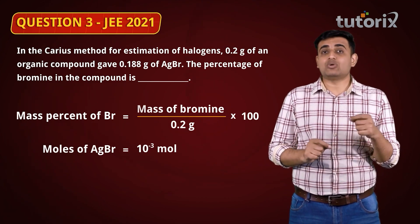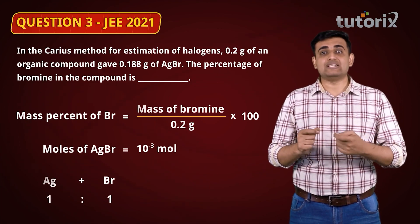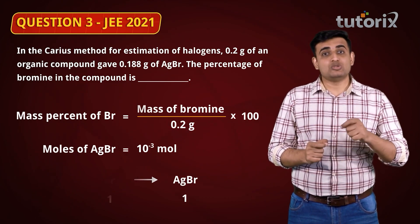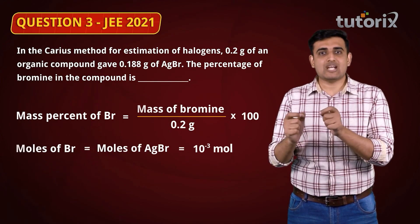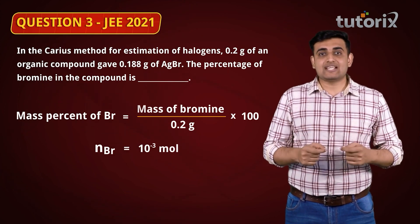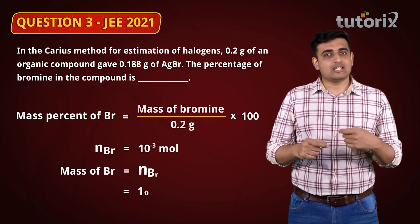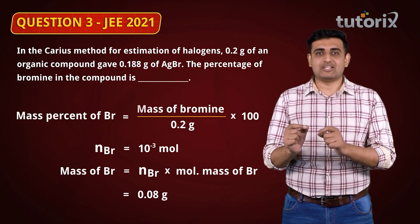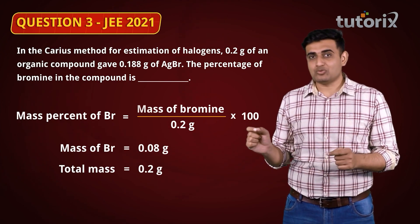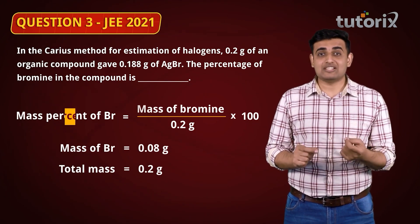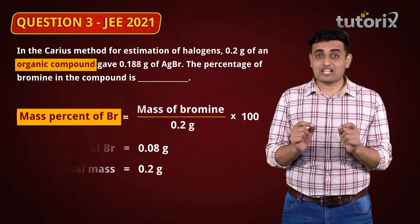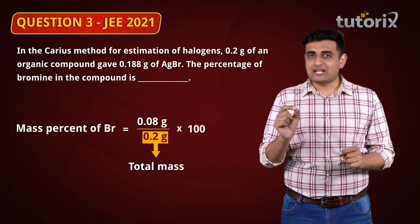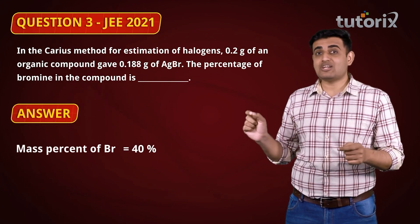Since Ag and Br combine in a 1:1 ratio to form AgBr, the number of moles of Br equals the number of moles of AgBr, which is 10⁻³ moles. The mass of Br = moles of Br × molecular mass of Br = 0.08 grams. Now with the mass of bromine (0.08 g) and total mass of the organic compound (0.2 g), mass percentage of bromine = (0.08 / 0.2) × 100 = 40%. The correct answer is 40%.